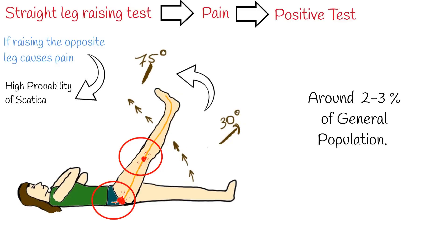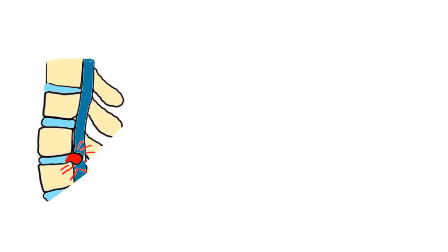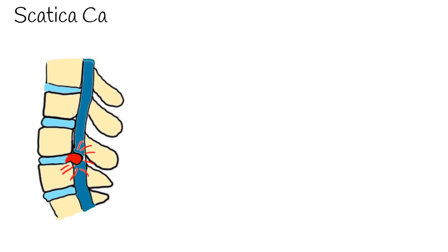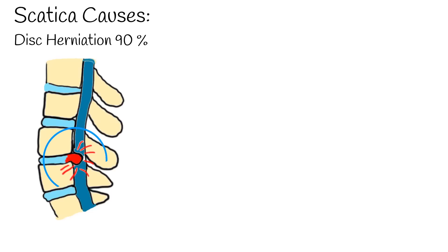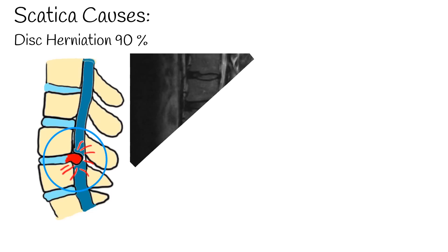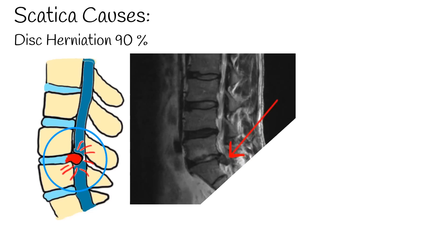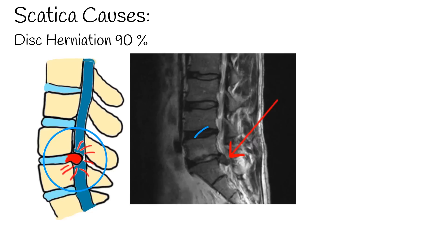Sciatica-caused leg pain occurs in around 2–3% of the general population. In about 90% of cases, sciatica is caused by a herniated disc with nerve root compression. Other minority causes include lumbar stenosis, and even more rarely, tumors.